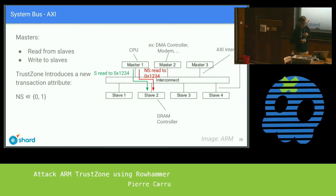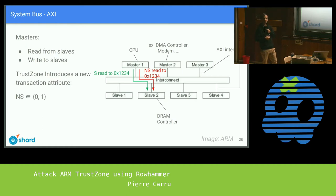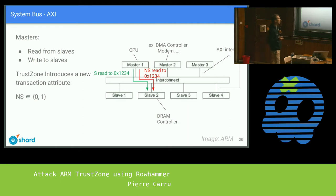The CPU can operate in two modes: secure and non-secure. Every memory operation is marked with the state the processor was in when the read or write was made. For example, running an Android application is non-secure state, so every read to the DRAM controller is marked NS (non-secure); in secure state it's marked S (secure). The DRAM controller needs to be aware of this flag and can block operations it considers illegal. Usually a part of DRAM is reserved for the secure OS.